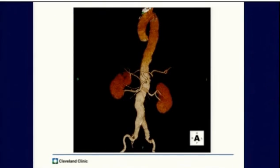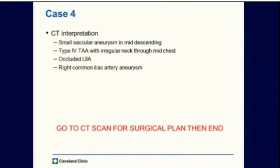So this is a picture of his aneurysm, and we'll go over it in greater detail on the Terra Recon. The interpretation of this scan was really that it was a type 4 thoracoabdominal aneurysm, or ending somewhere in the visceral segment, had an occluded left internal iliac aneurysm, and also had a right common iliac aneurysm. I put these notes on the slides for me to now show you the CAT scan, and then for you to determine the surgical plan, and then we have to wait until the end of the afternoon to figure out what happened.